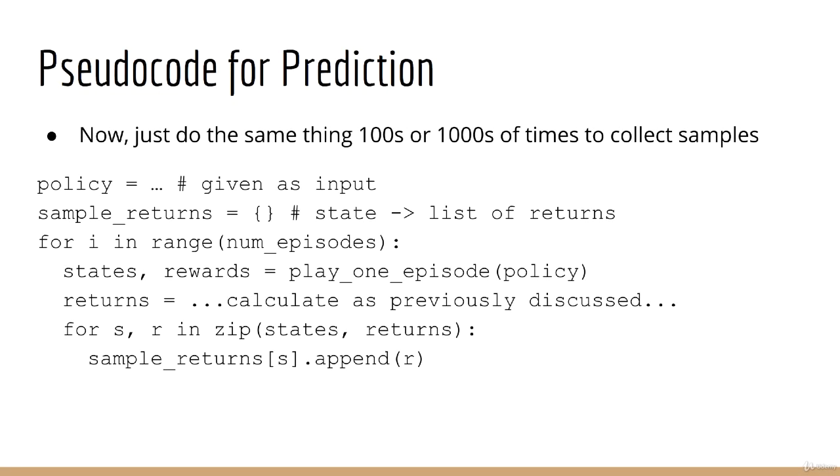Alright, so how do we put the above algorithm into pseudocode? Well, that's simple. Everything we just did, now we just do it in a loop. Do the thing we just did several hundred or several thousand times. Then, for each state, take the average return.